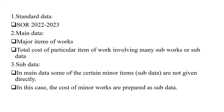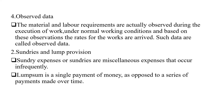Main data includes the major items of work and the total cost of a particular item of work involving many sub-works. Sub data refers to minor items that are not given directly in the main data — in such cases, minor works are prepared separately, which is known as sub data.